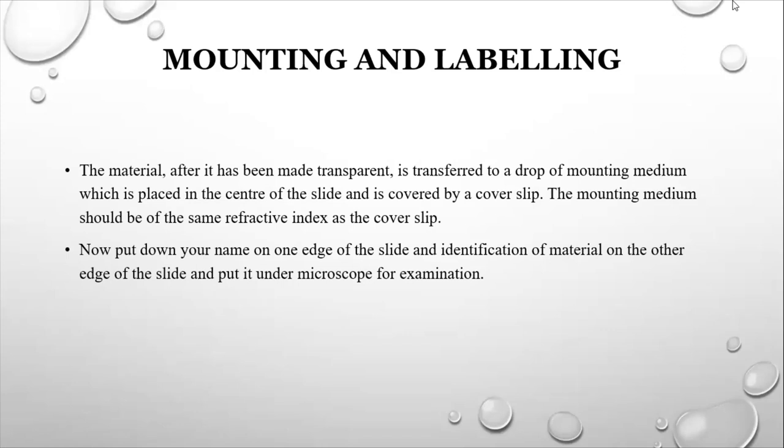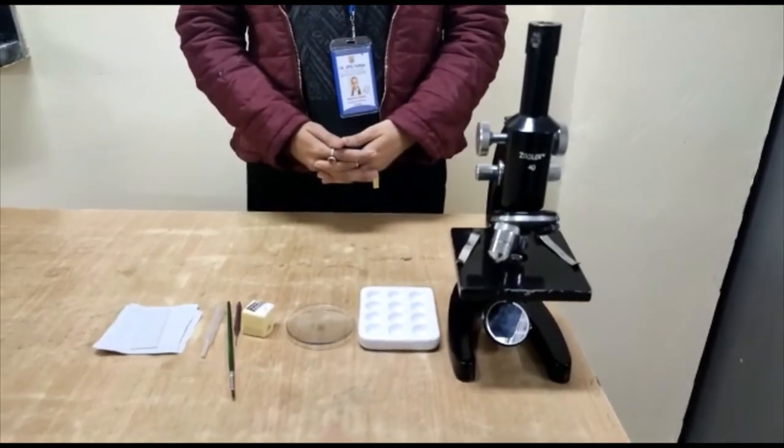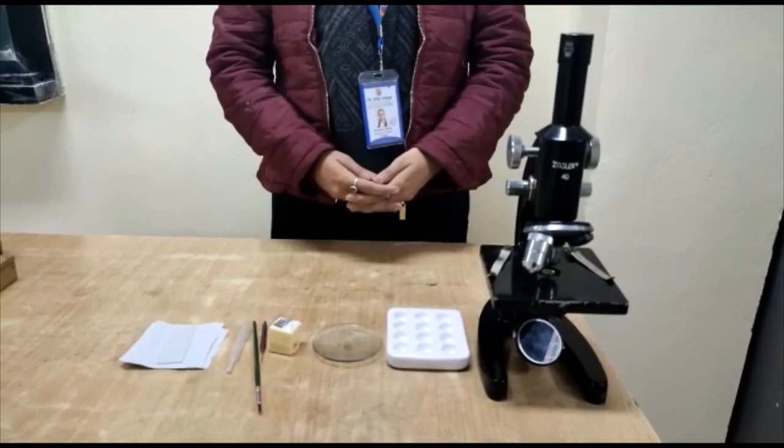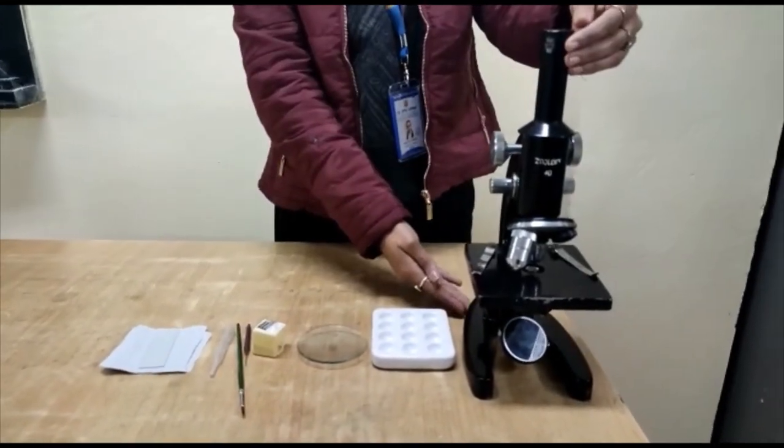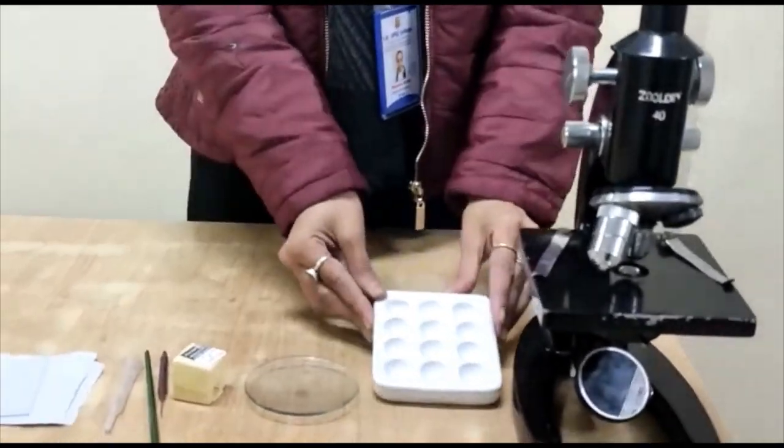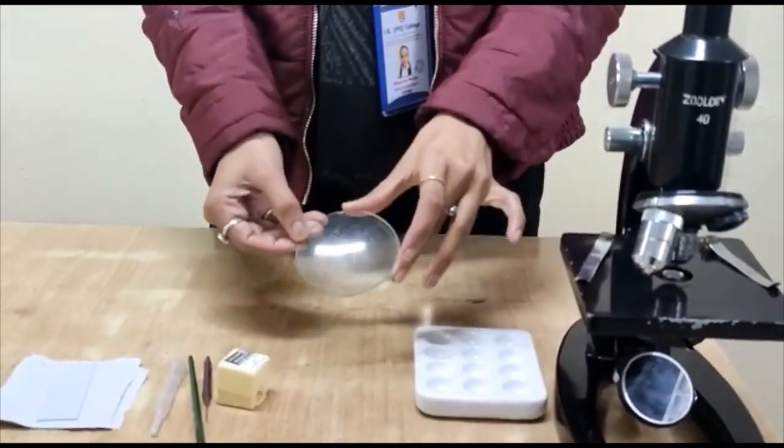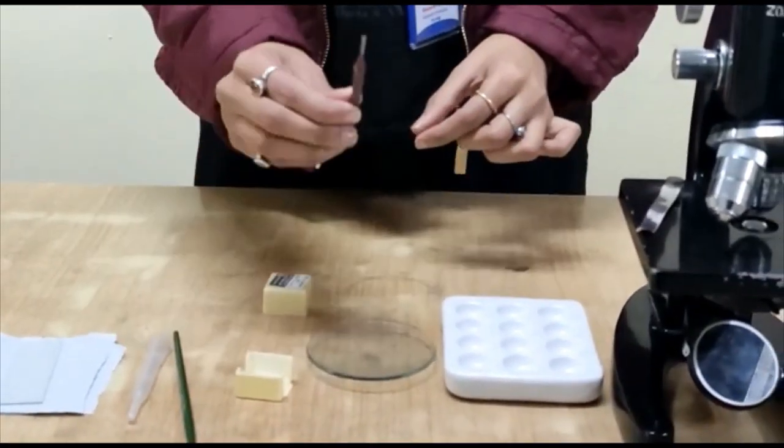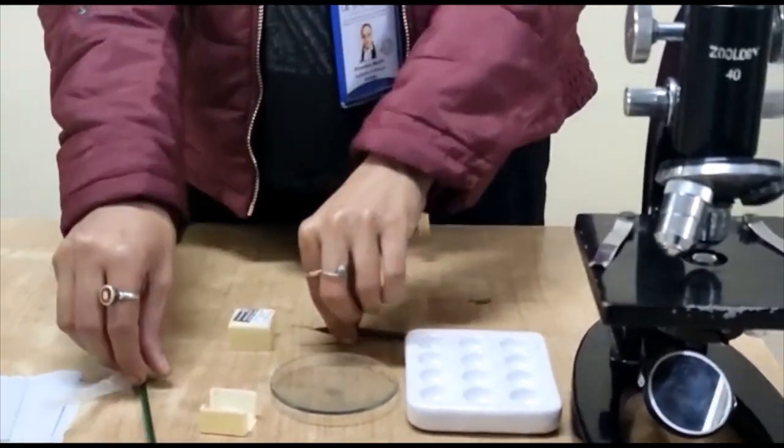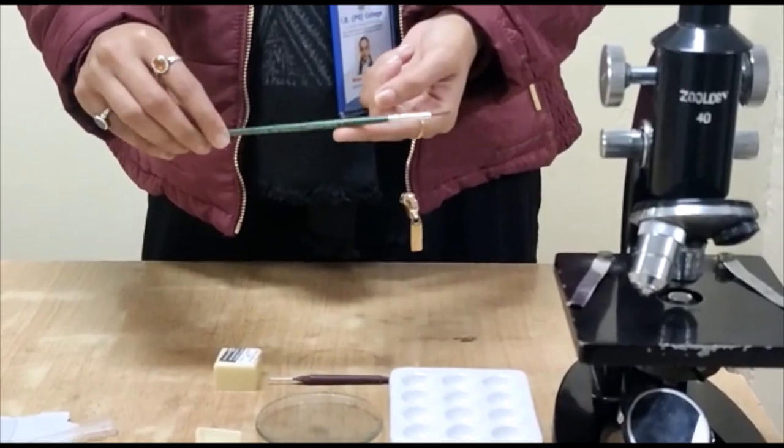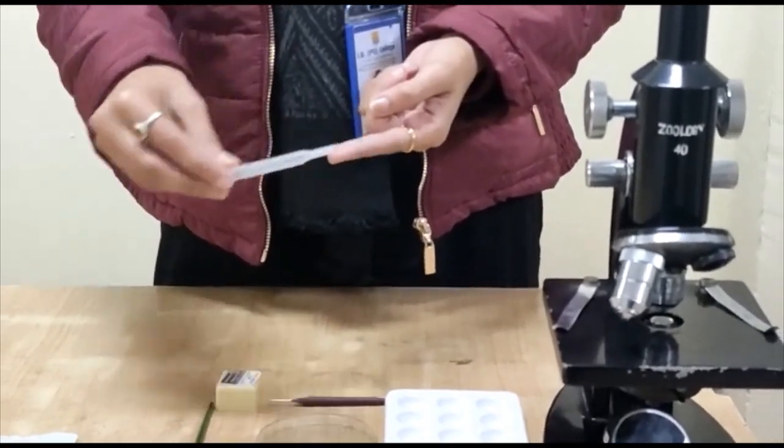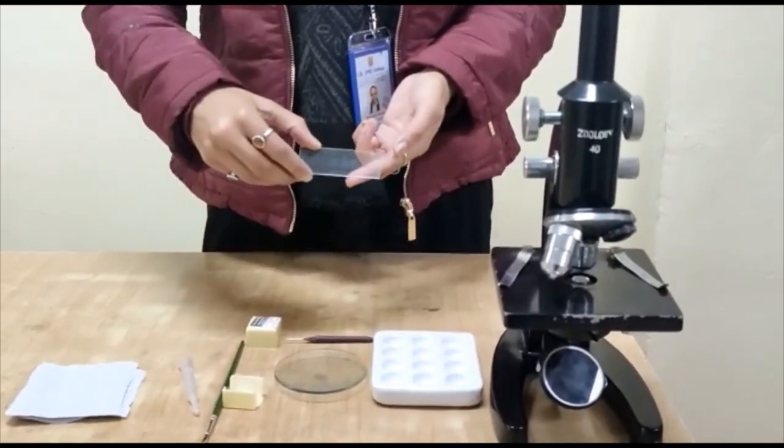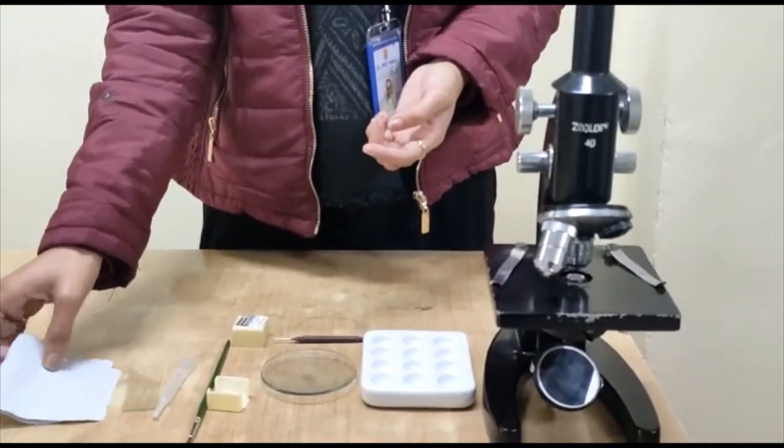Now let me give you a brief demo of this explanation of how to make the permanent slide. The material required for the process of permanent slide preparation are a microscope, a staining tray, watch glass, cover slip, a needle, a brush, a dropper, a clear and clean slide, and some filter paper.